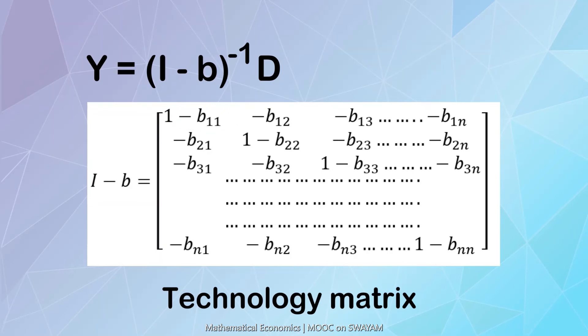Once the inverse matrix is determined, it is multiplied with the vector of final demands to get the outputs.